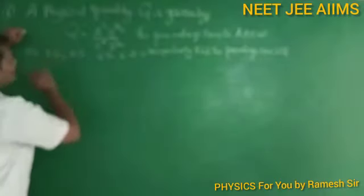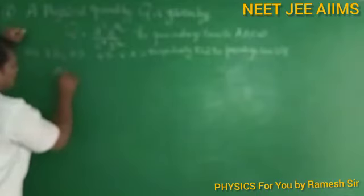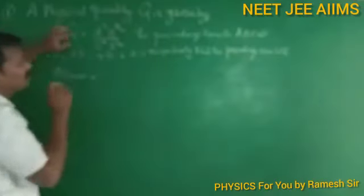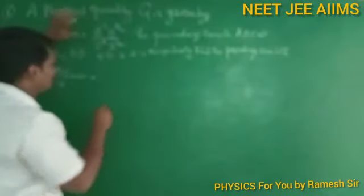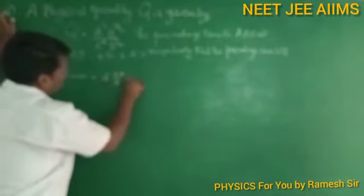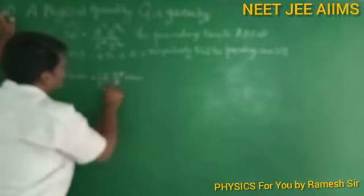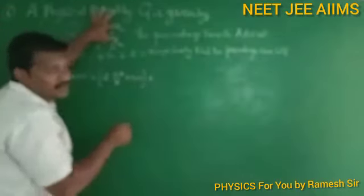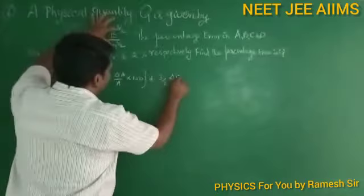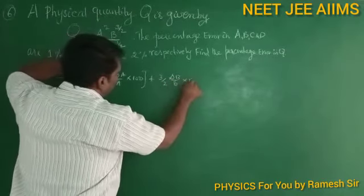So percentage error, del q by q into 100, equals 2 times del a by a into 100 plus 3/2 times del b by b into 100.